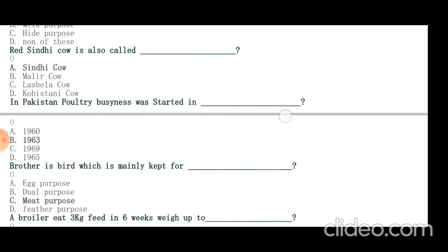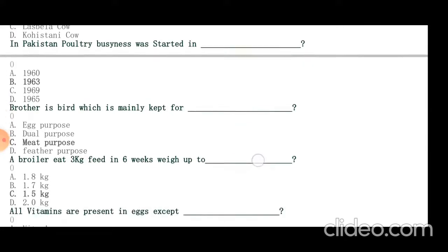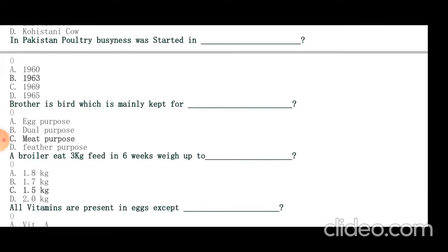Broiler is bird mainly kept for meat purpose. A broiler eats 3 kg of feed in 6 weeks and weighs up to 1.5 kg. By thumb rule, weight of the bird is double to that of feed. If weight of bird is 3 kg, it has eaten 6 kg of feed. Feed to water ratio is also double. If it has eaten 3 kg of feed, it has drunk 6 liters of water.